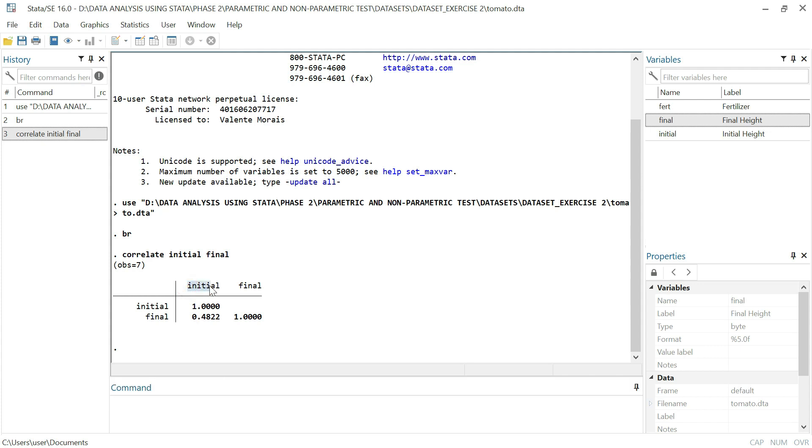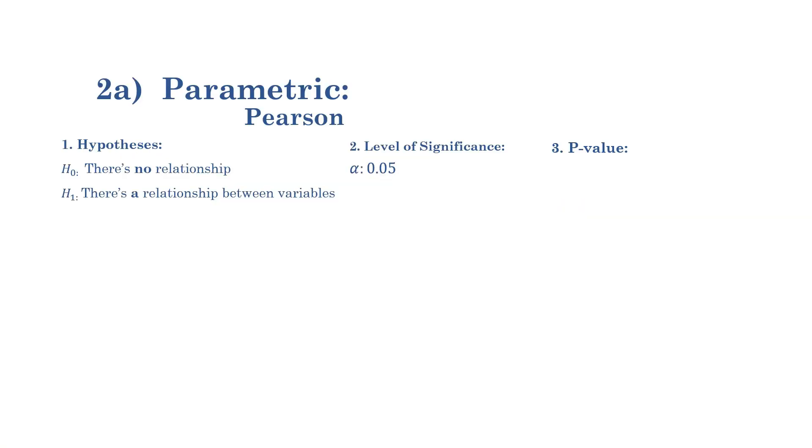We can see that between initial and final, the result of correlation is 0.482, which is not close to 1. Now, by reading our big six, for this test, we don't have the p-value, but we have the correlation results. The one that I'm mentioning now, which is 0.4822.